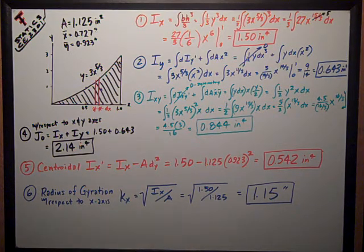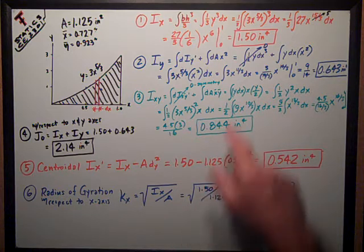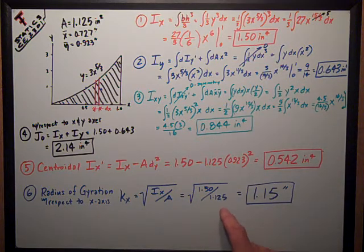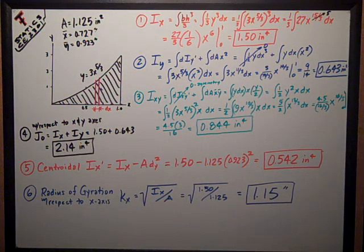Finally, number six was the radius of gyration with respect to the x axis, and that's called kx, and it's just the square root of ix over a, moment of inertia divided by the area. 1.5 was the moment of inertia about the x axis, divided by 1.125 is the area, square root 1.15 inches.